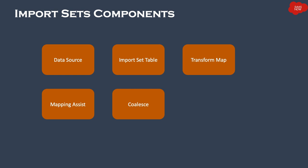Then we have Coalesce. Coalesce is used to trigger a check before importing data. If enabled on a field, the system checks for an existing record; if a match is found, the same record is updated, otherwise a new record is inserted. Coalesce is a very important functionality for importing data. Finally, the Target Table is the main table where the data is ultimately imported.